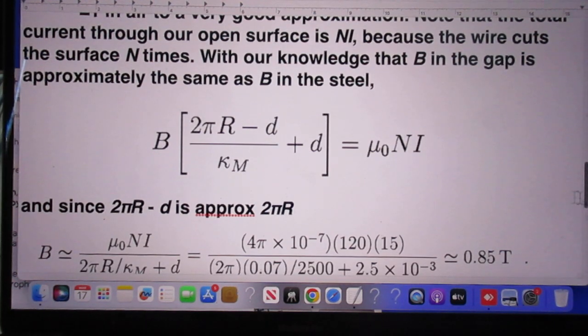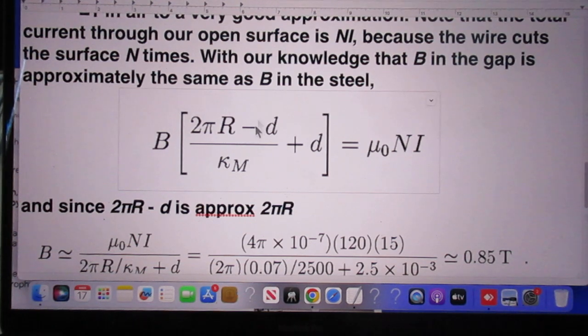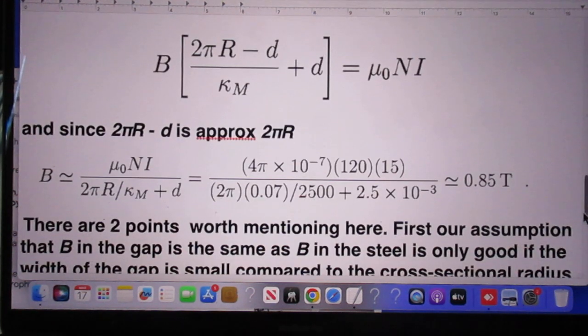Now since 2πR minus D is approximately 2πR, 2πR is about 176 times larger than D, you can of course ignore this D. But not this one. But you can ignore this one. So now you write it down, you write it out, you know everything.